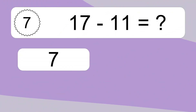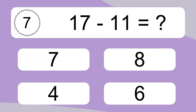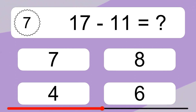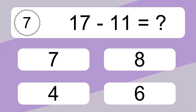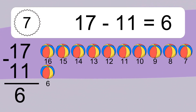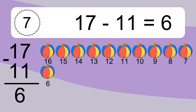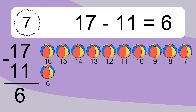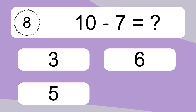17 minus 11 equals what? 17 minus 11 equals 6. Let's count it: 16, 15, 14, 13, 12, 11, 10, 9, 8, 7, 6.